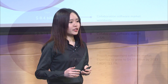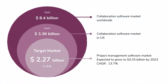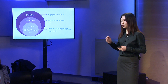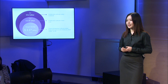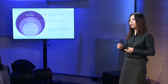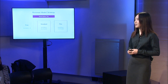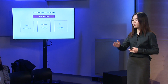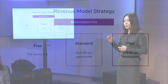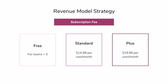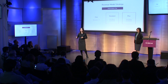The market for collaboration software is huge. In the US, the market is about $3.36 billion. Our target market is project managers who work as part of a team in a company, which represents a revenue opportunity of over $2 billion, and is expected to grow to over $4 billion by 2023. We have three revenue models ranging from a free plan to a plus plan. By talking with IT departments from different companies, we learned that our price is below the threshold for levels of approval, so a mid-level manager has the authorization to purchase our product.